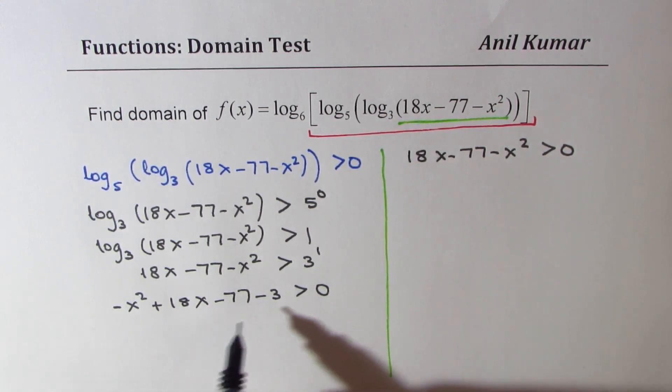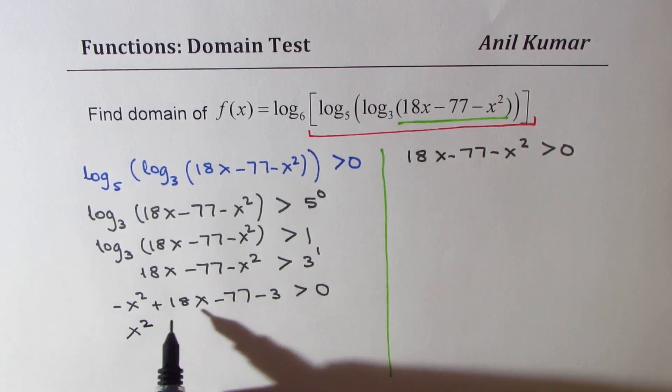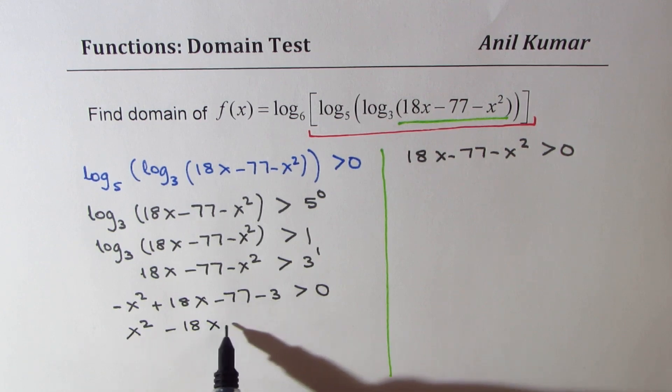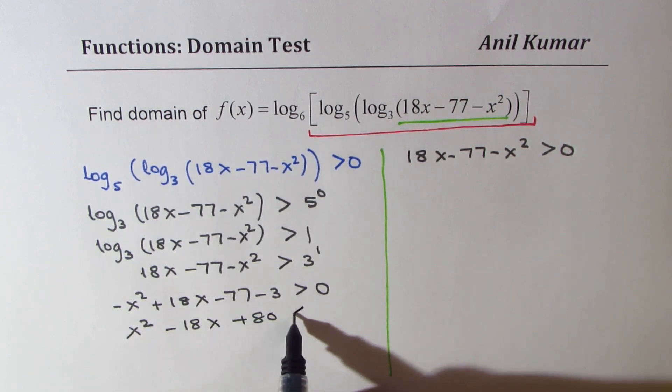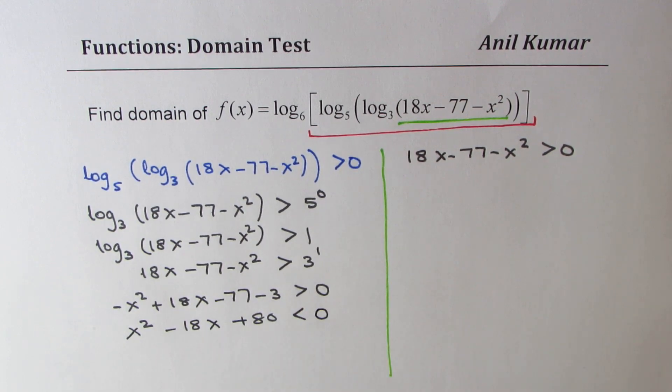So we can actually change the sign make it positive. So we'll make it minus 18x and that will become positive 80. And when you multiply with negative the sign will change so you get this.